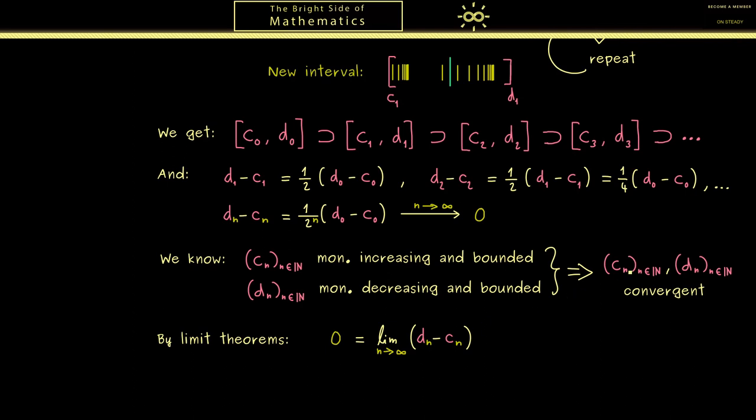Simply because both limits here also exist. So please note our conclusion here is that the limits of dn and cn are the same.